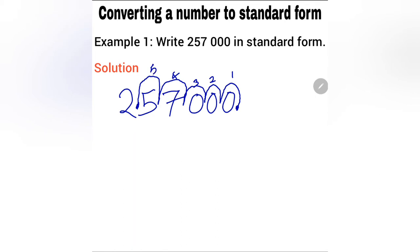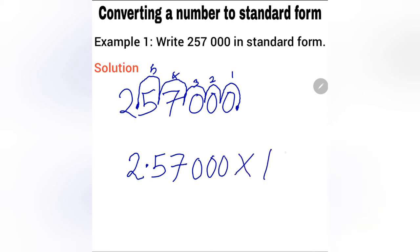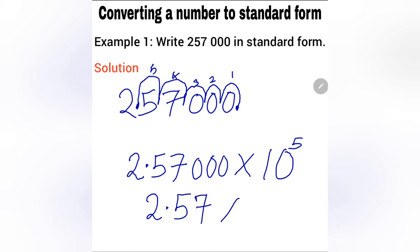So to express 257,000 in standard form, my answer will be 2.57 multiplied by 10 to the power 5. The exponent 5 is the number of places we counted when moving the decimal point. So 257,000 is the same as 2.57 × 10^5.